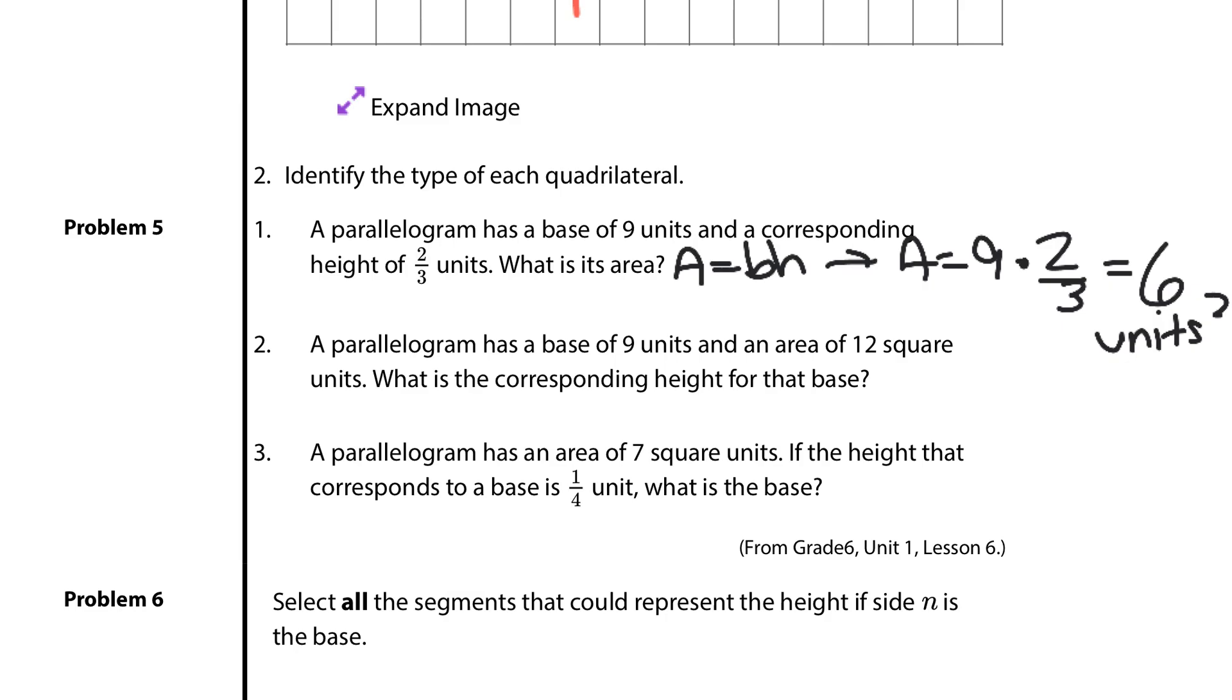Next, a parallelogram has a base of nine units and an area of twelve square units. What's the corresponding height for that base? For this, I would say area still equals base times height because it's still a parallelogram. But this time we have an area of twelve equals the base of nine and the height we really don't know. If I divide twelve by nine, that will give me my height. Well, twelve divided by nine, one way of looking at that, if you simplify by dividing by three on top and bottom, is four-thirds for our height, which is the same thing as one and one-third units. So either four-thirds units or one and a third or something equivalent to twelve-ninths.